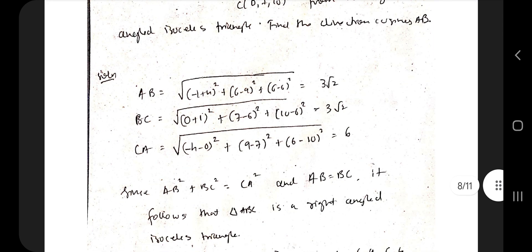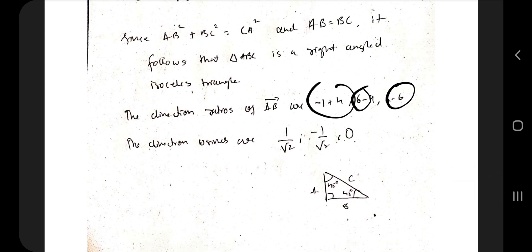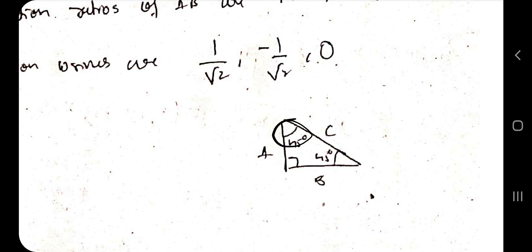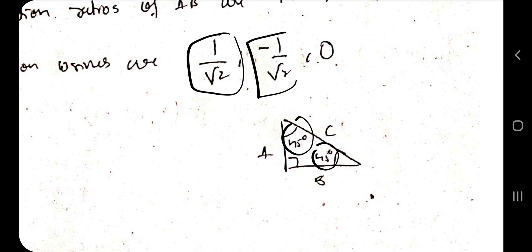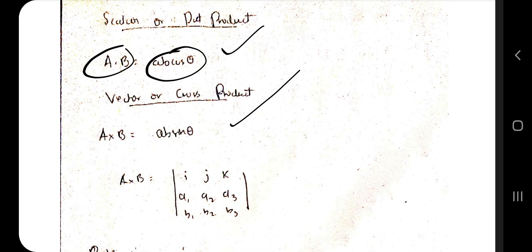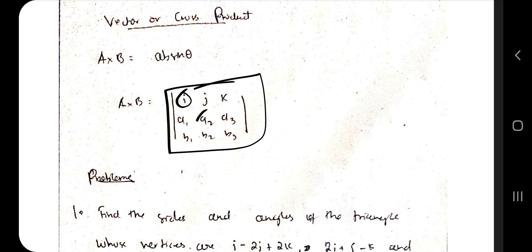For direction cosines of AB, take the components (−1, 4, ...) as direction ratios. The angles α and β are both 45°, so cos 45° = 1/√2, cos(−45°) = −1/√2, and cos 90° = 0, giving three direction cosines. The scalar product formula is a·b = ab cos θ and the vector (cross) product is a×b = ab sin θ. The cross product can also be written in determinant form; these concepts were already studied in 12th standard.